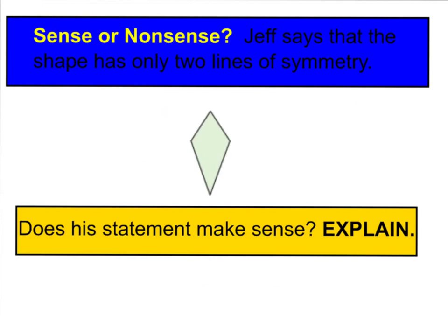Here's a question for you. Sense or nonsense? Jeff says that the shape shown has only two lines of symmetry. Does his statement make sense? Yes or no? And explain. Look closely. Does that shape have two lines of symmetry, less or more? Does he make sense or is it nonsense? Pause the video and write your response.